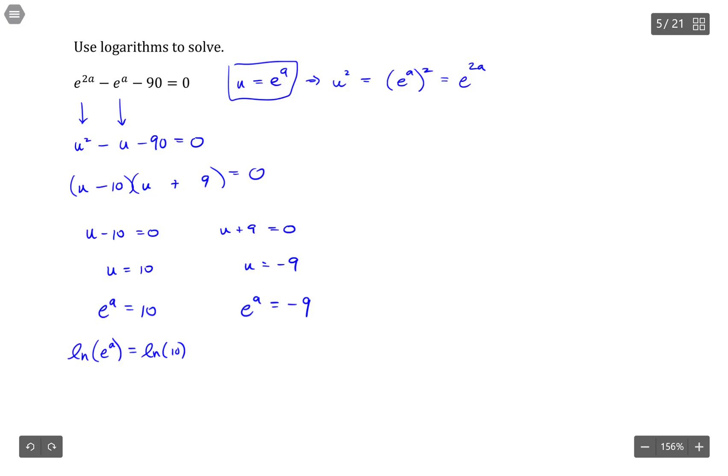And the natural log of, well, the a can come out front as a constant multiplier, then the natural log of e is just 1. So this says a is equal to the natural log of 10.